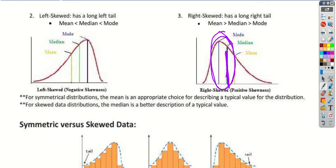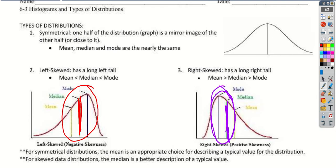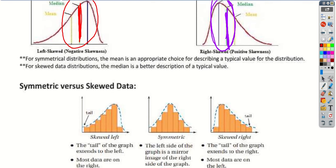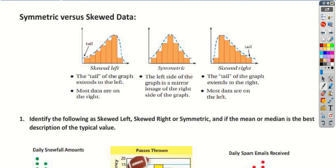The same thing if we're left skewed — the tail is on the left and all the data shifts over to the right. The median is a better representation of most of the numbers. And if it's right down the middle, then we want to pick the mean, which represents the symbol X-bar in your calculator, because that's right in the middle. Remember, the tail goes to the left if we're skewed left, the tail goes to the right if we're skewed to the right. So it's kind of opposite: if we skew right, most of the data is actually on the left, and if we skew left, most of the data is on the right.